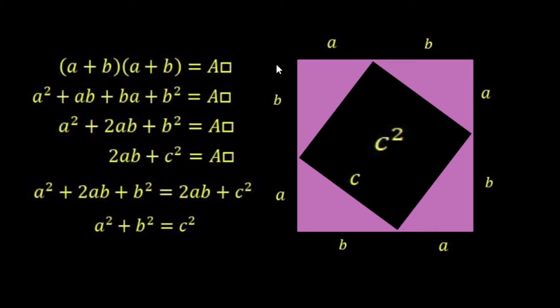So we said that we can work out the area of the large square by multiplying a plus b times a plus b, and this is written here.